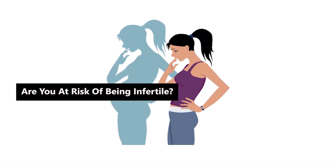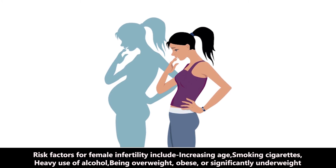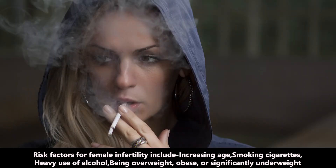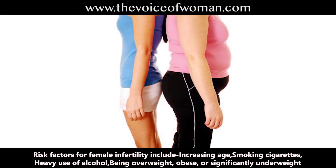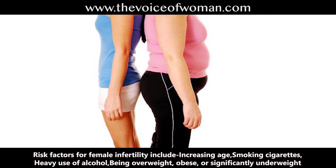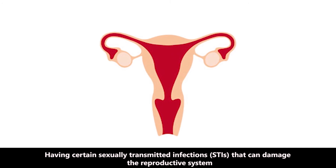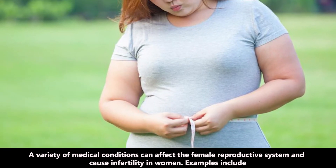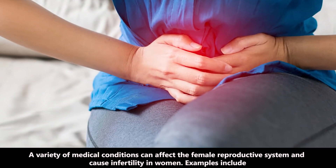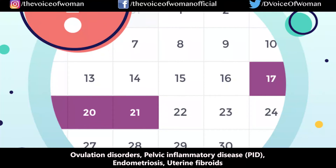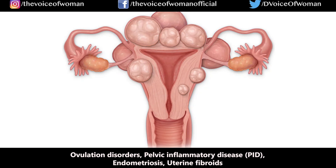Risk factors for female infertility include increasing age, smoking cigarettes, heavy use of alcohol, being overweight, obese, or significantly underweight, and having certain sexually transmitted infections that can damage the reproductive system. A variety of medical conditions can affect the female reproductive system and cause infertility, including ovulation disorders, pelvic inflammatory disease, endometriosis, and uterine fibroids.